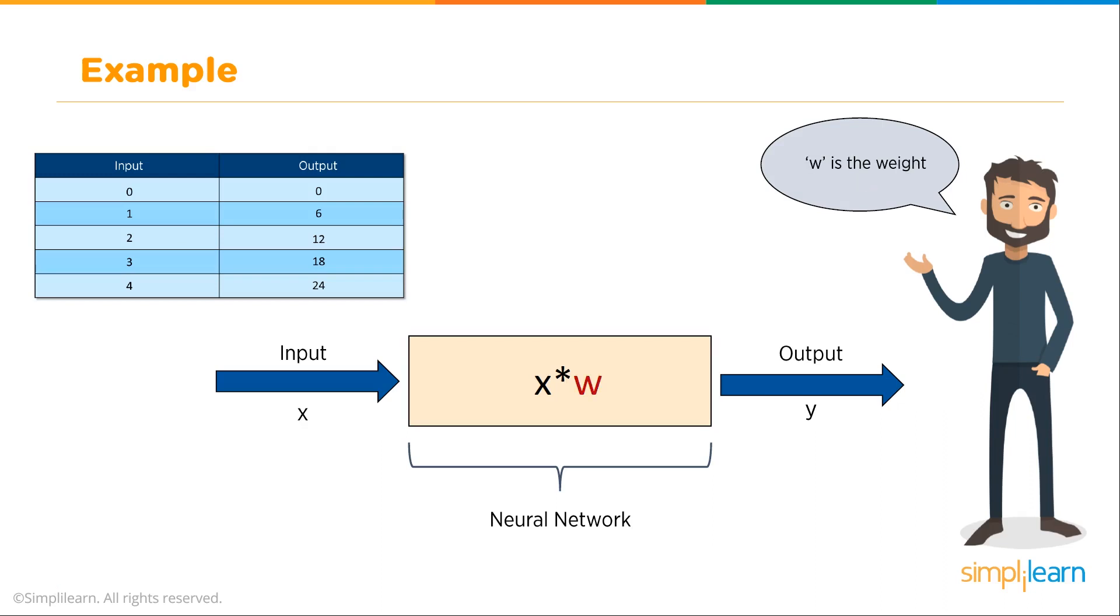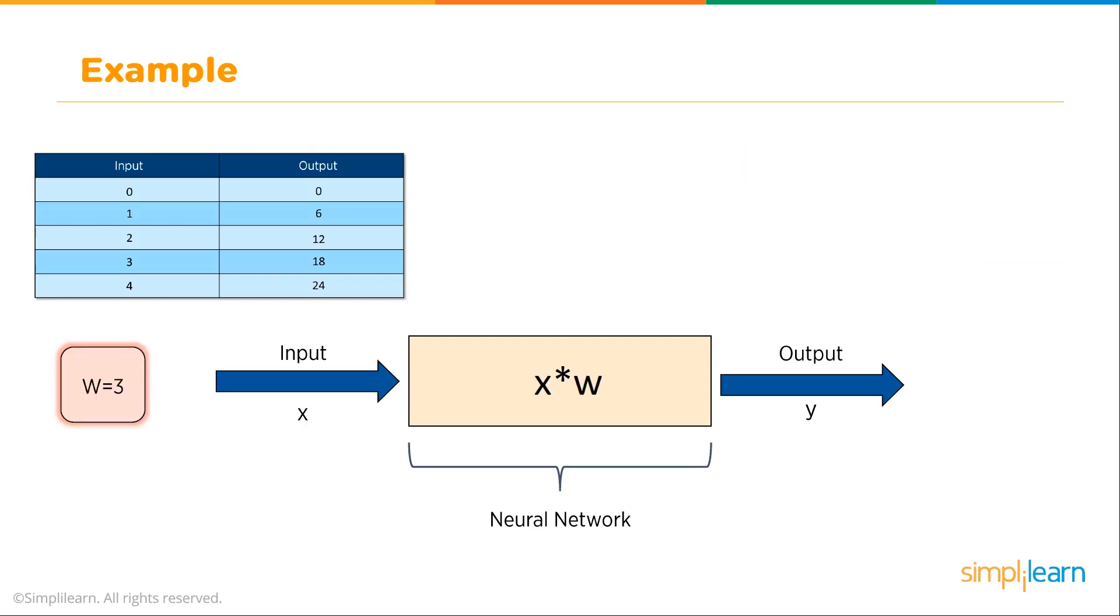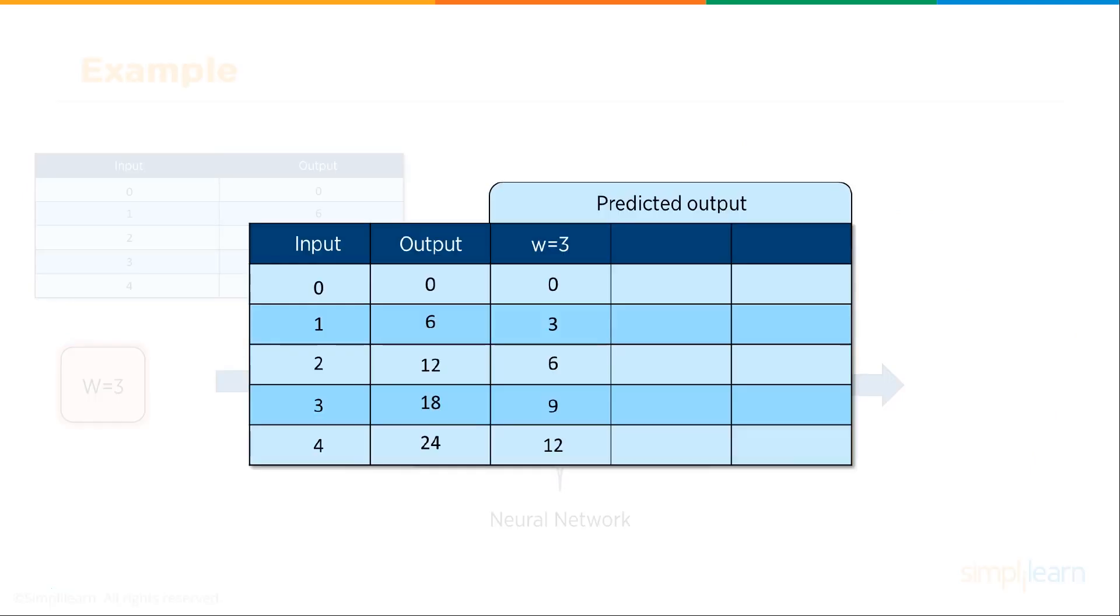We have value times the weight, just a single neuron going through, X times W. The network starts training itself by choosing a random value for W. We're going to guess that W equals 3, just roll the dice, randomly generate the number 3 for W. Then we put W equals 3 in here. We have our input 0, output 0. W equals 3 equals 0, so we have no error on the first line.